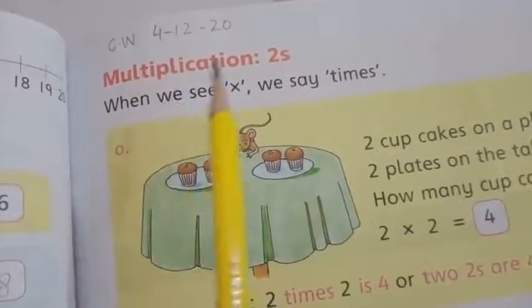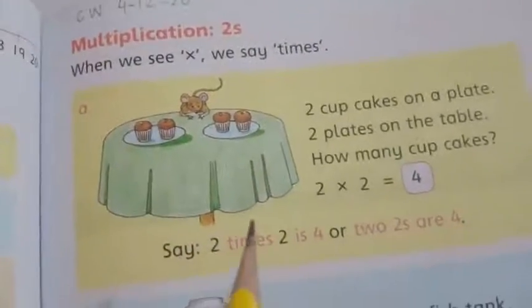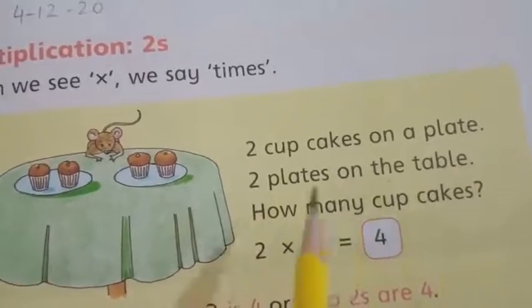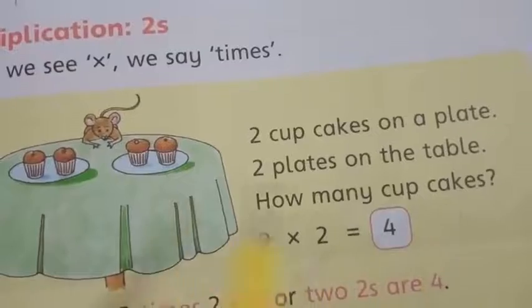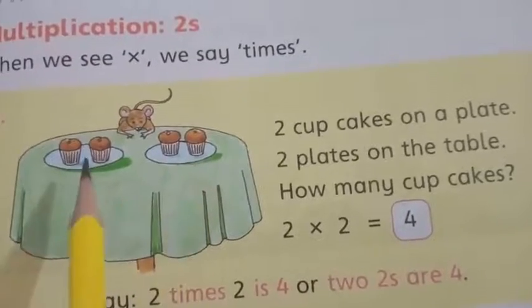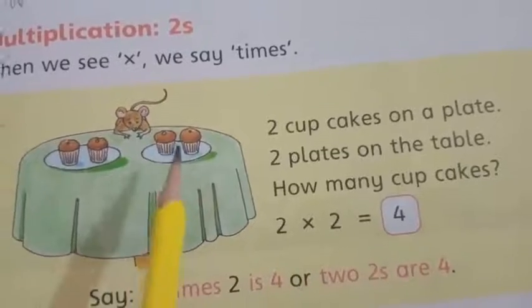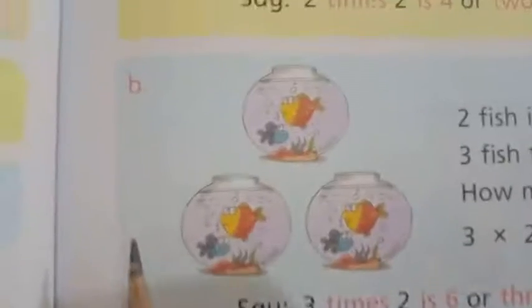Our topic is multiplication, which we have done yesterday. Here are three examples. Question number A: two cupcakes on a plate, two plates on the table — how many cupcakes? There are two plates and two cupcakes. Two twos are four: one, two, three, four.